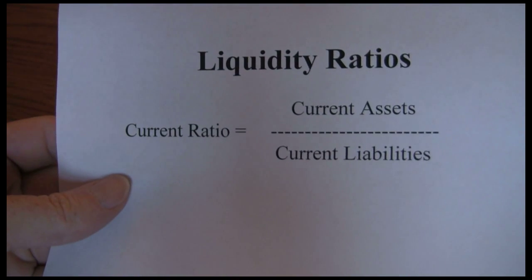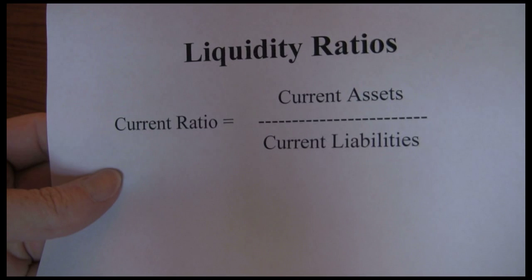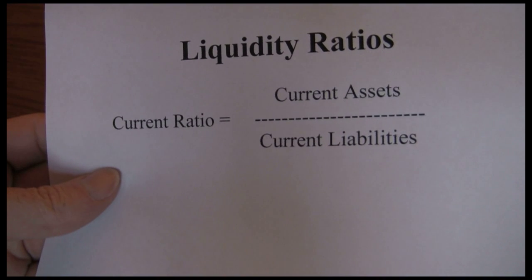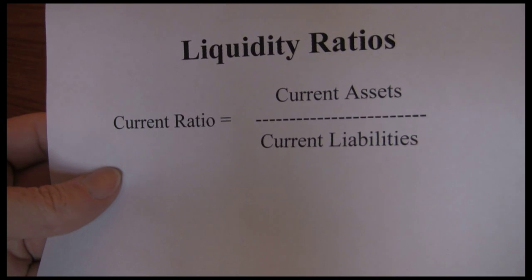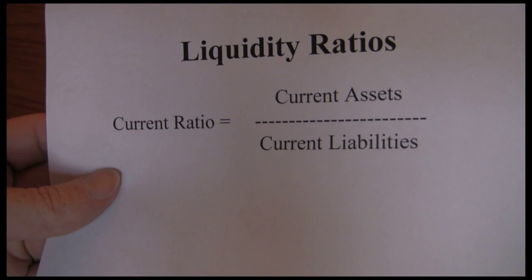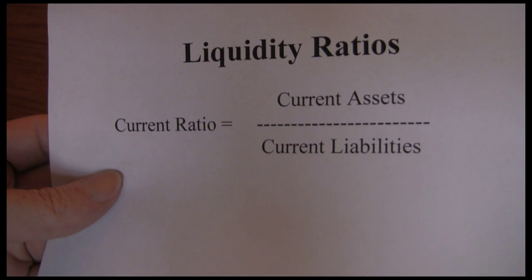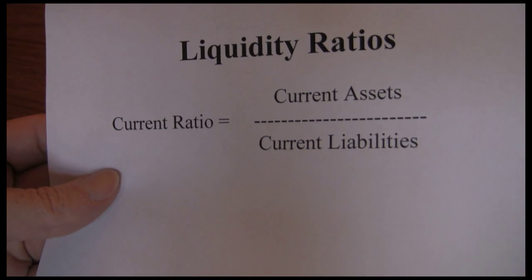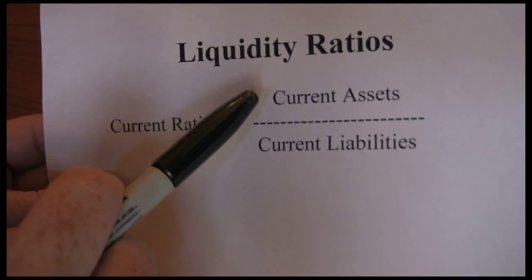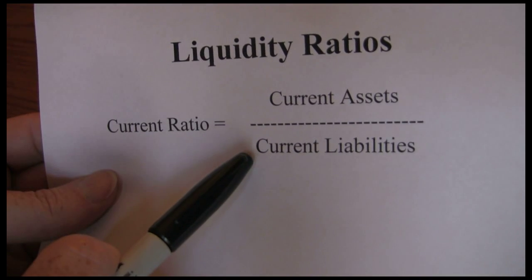The first liquidity ratio is the current ratio. Current ratio measures current assets divided by current liabilities. The idea is that current assets represent cash or assets like accounts receivable and inventory that should become cash relatively quickly. Current liabilities represent money we're going to owe relatively soon. We want to make sure we have enough cash or things that will become cash quickly to pay off debts we'll owe soon.